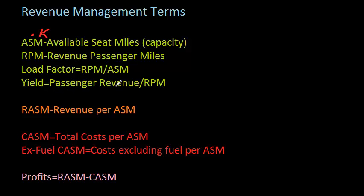Finally, we have yield. This is a measure of how productively airlines are using their inventory — you take the total revenue from passengers divided by the number of revenue passenger miles. So if you had those 75 customers and divided their total revenue by the seat miles they're taking out of inventory, you'd get a measure of yield — how much the airline is getting per unit of inventory. This is related to average fare: on a per-flight basis you might look at average fare, but at a network level, yield is more relevant.